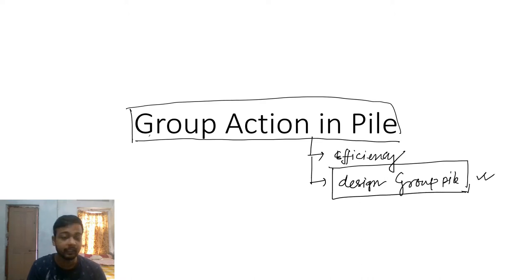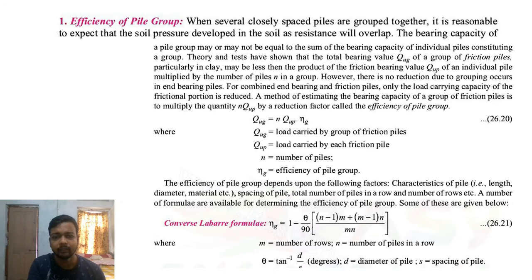So let's get started. What is the efficiency of a pile group? When several closely spaced piles are grouped together, like four piles closely spaced, they are termed as a group.